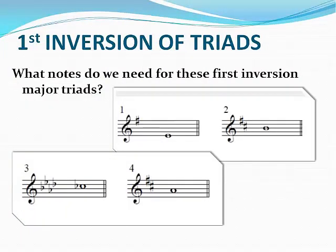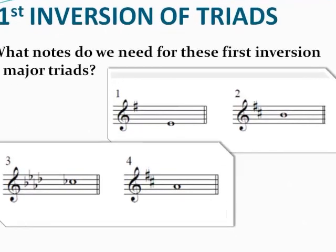Now we're moving on to minor triads. We'll go through the same steps to find the notes for these first inversion minor triads. In number one, we know the third of the triad is E, so to find the root we must go down a minor third from E to C-sharp. The root of the triad is C-sharp, the third is E, and the fifth is G-sharp. This is a C-sharp minor triad. To write this as a first inversion triad, you would add a G-sharp and a C-sharp above the E.